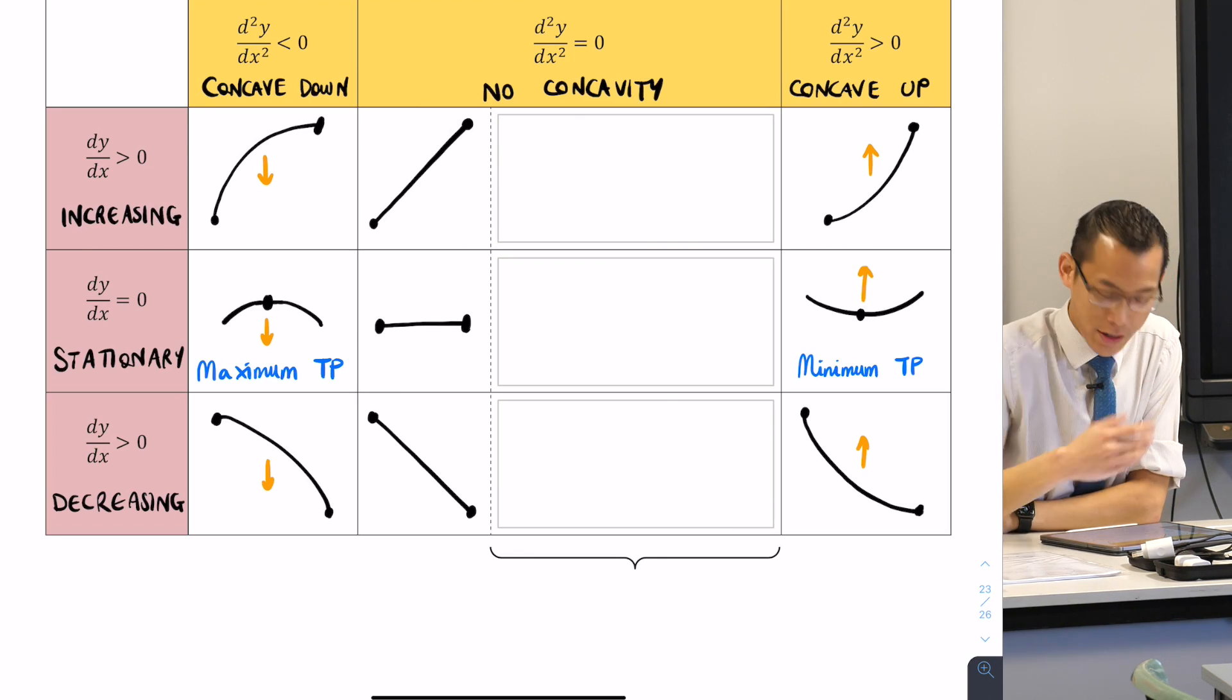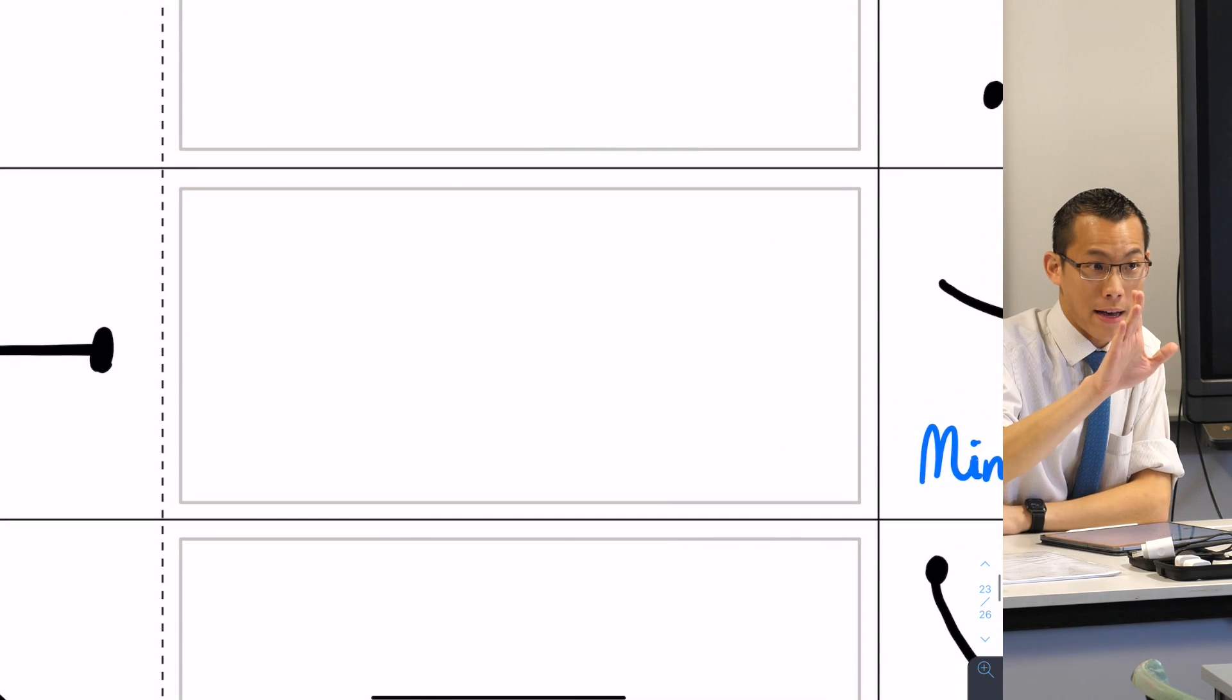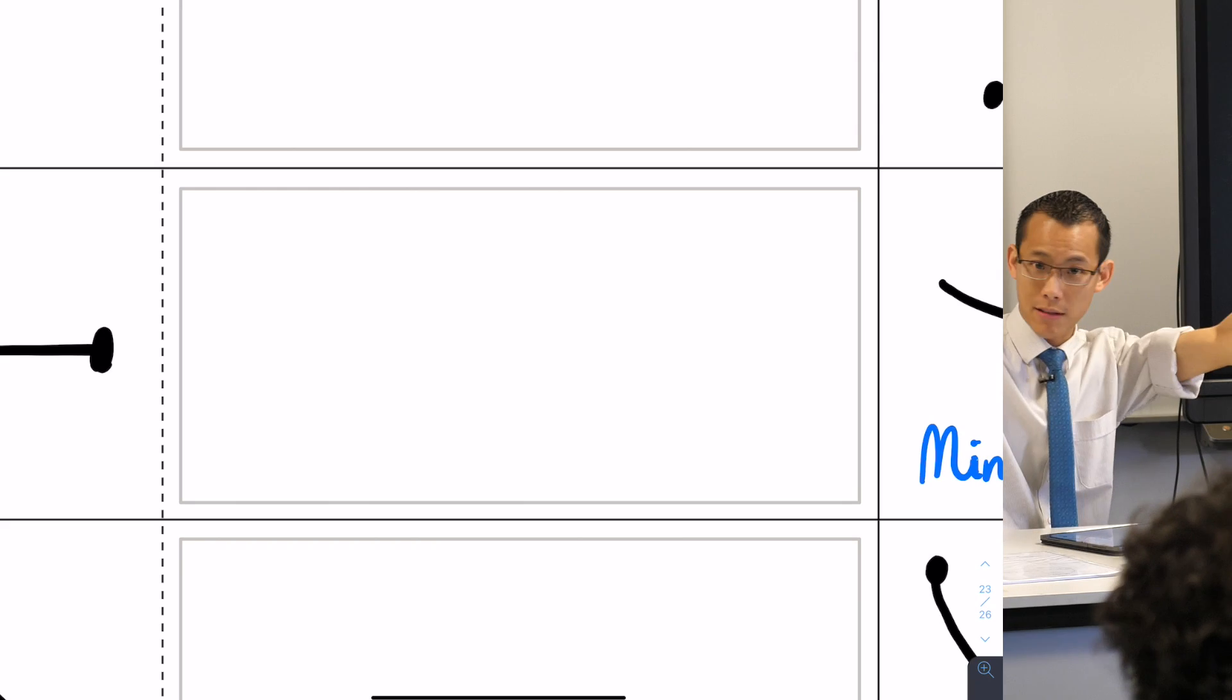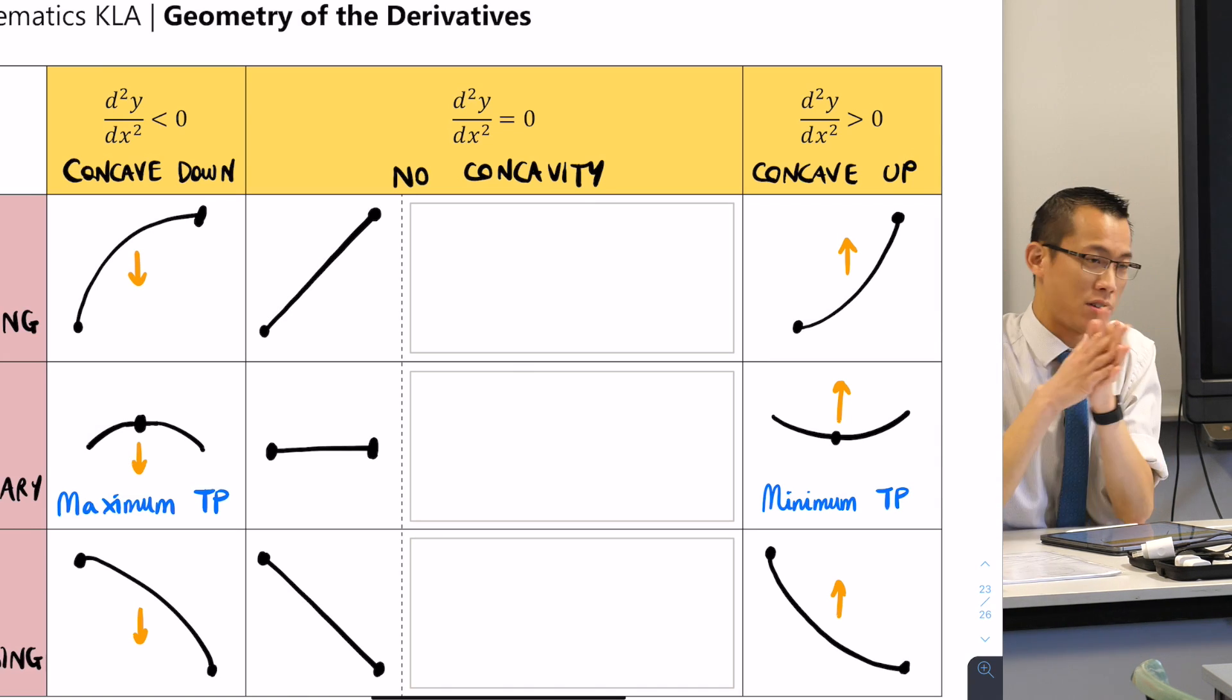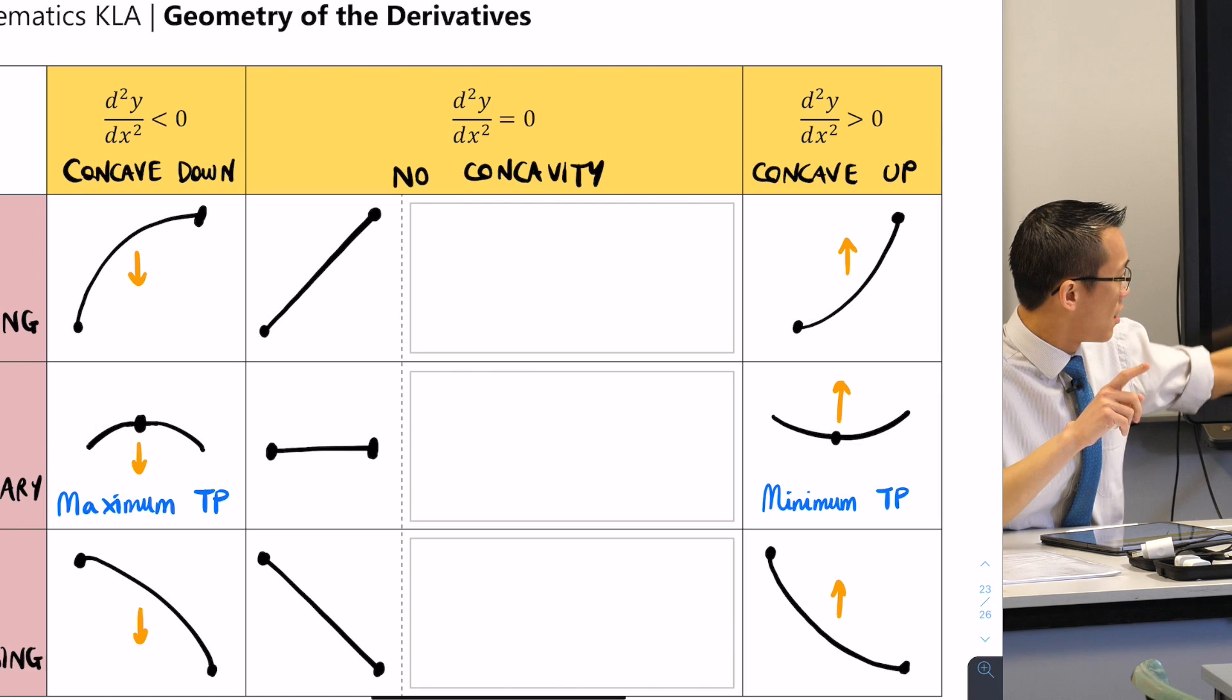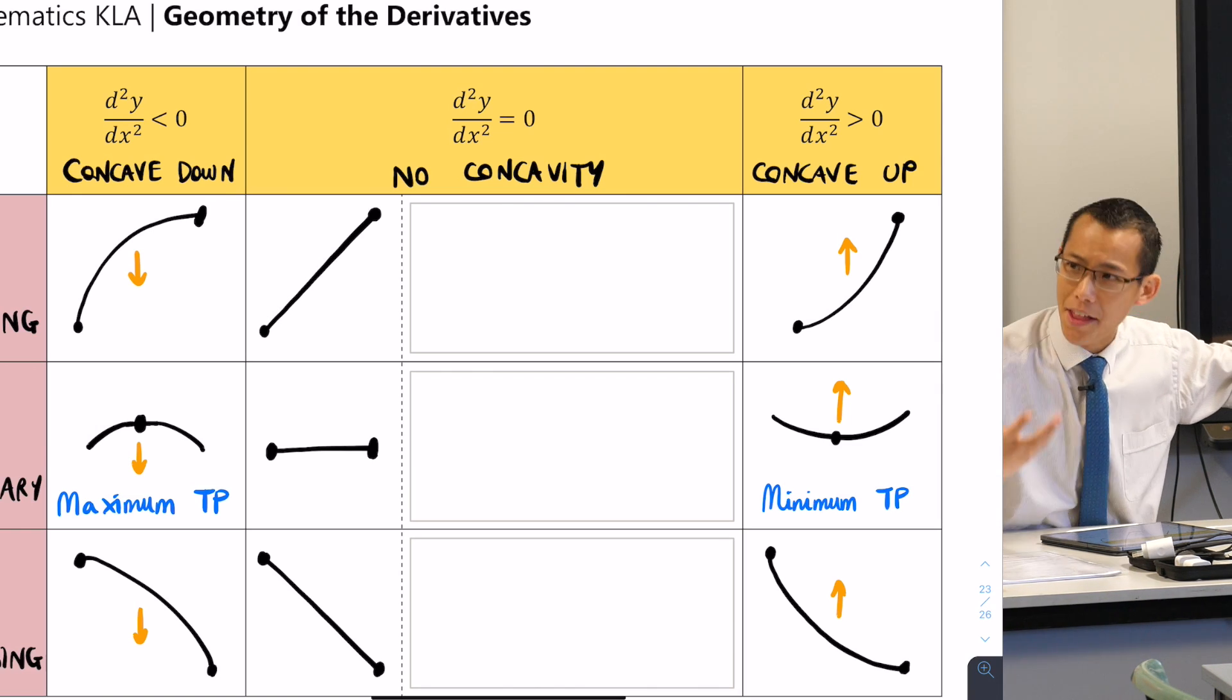For example, you actually know what's going to go here in the middle. Think about this: it's stationary, so you know it's going to be horizontal, and also there's no concavity at this particular point. But it's not just a straight line, we've already drawn one of those. It's not a maximum turning point, it's not a minimum turning point. What's the other kind of thing you can get when you have a stationary point?